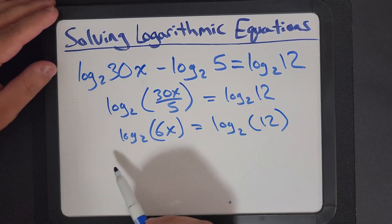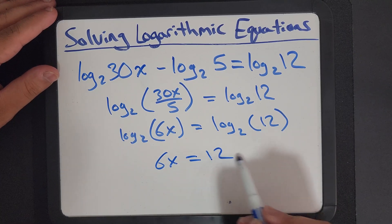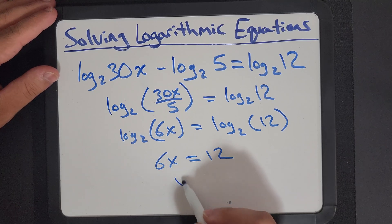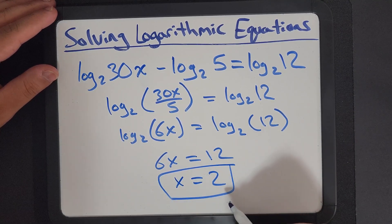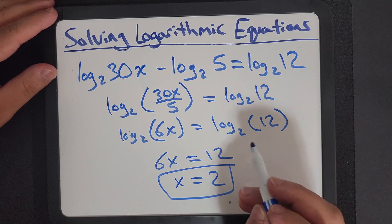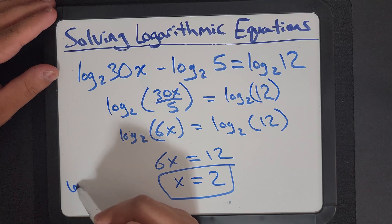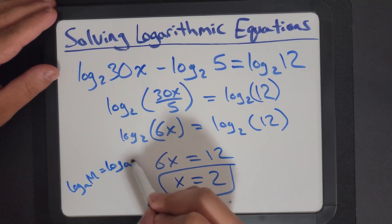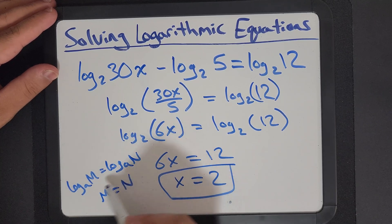And remember what we said, we can easily just say 6x equals 12. Because of our log law, x is equal to 2. As you can see, if you can put it into this format, you can do this very quickly.